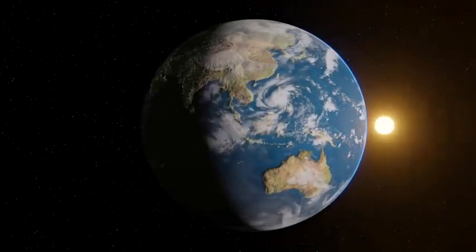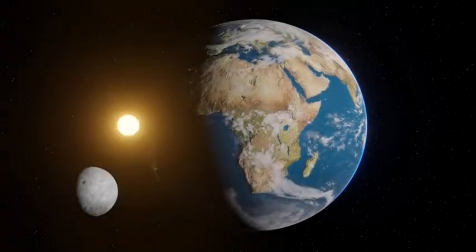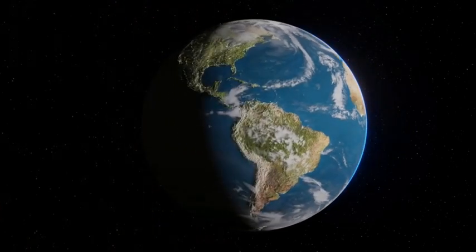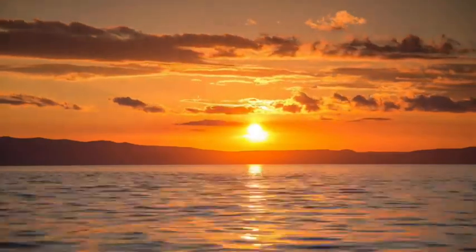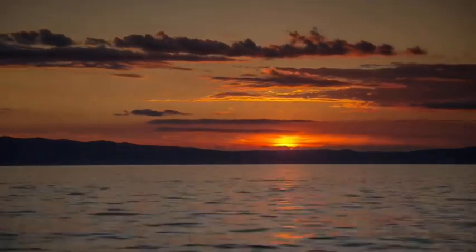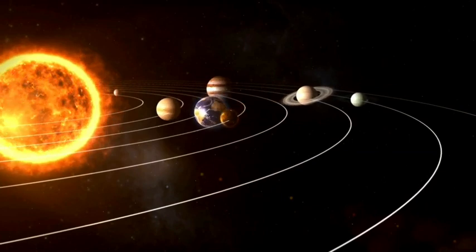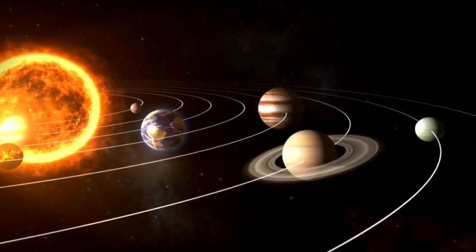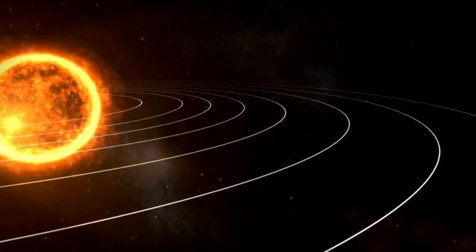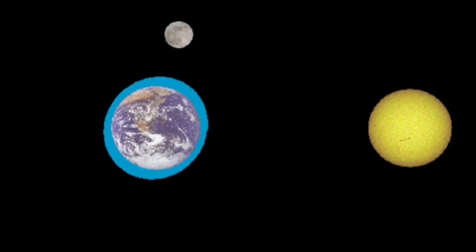The Sun also has a role to play in tide formation, albeit to a lesser degree. It has a bigger mass, which would cause a greater pull if it were closer, but its greater distance means the Sun's effect is only one third as big as the Moon's. When the Moon and Sun are aligned, we get extra large tides called spring tides, which happen six to eight times a year. When not aligned, they partially cancel each other out, causing smaller tidal extremes known as neap tides.